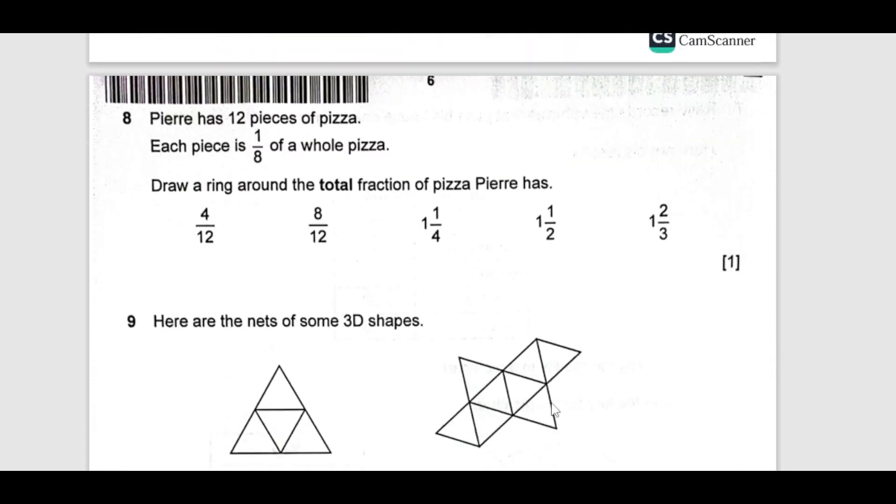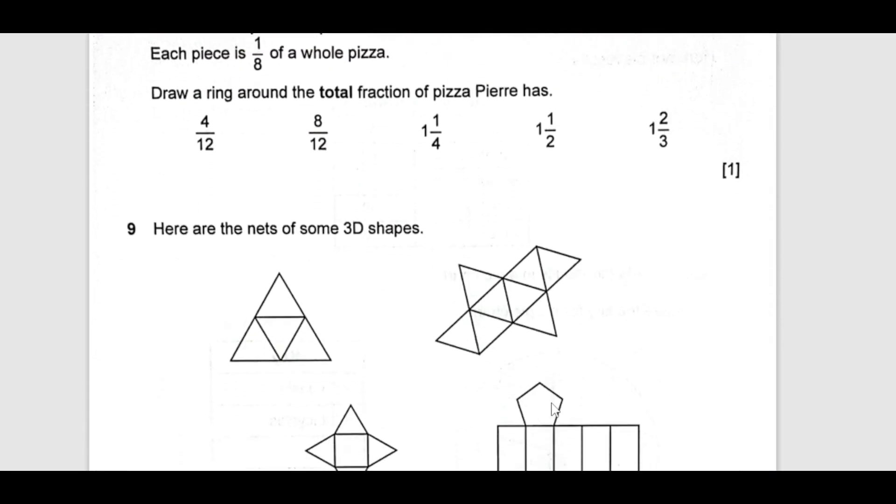Now, next number 8. Perret has 12 pieces of pizza. Each piece is 1 by 8 of the whole. Draw a ring around the total fraction of the pizza that he has. He has 1 by 8 of 12. 4 times 2, 4 times 3. This is 3 over 2 which is 1 and half. This is the one.